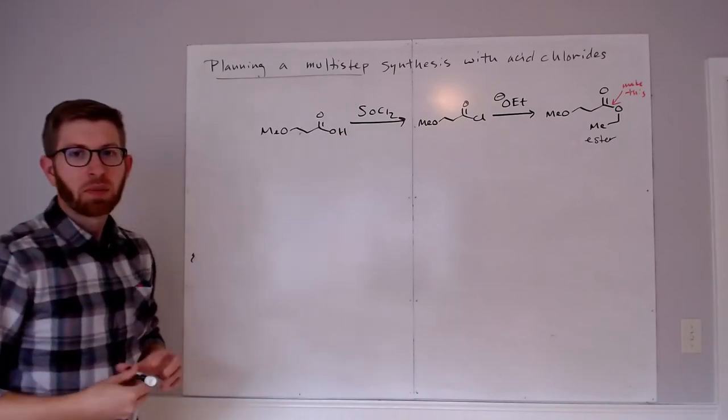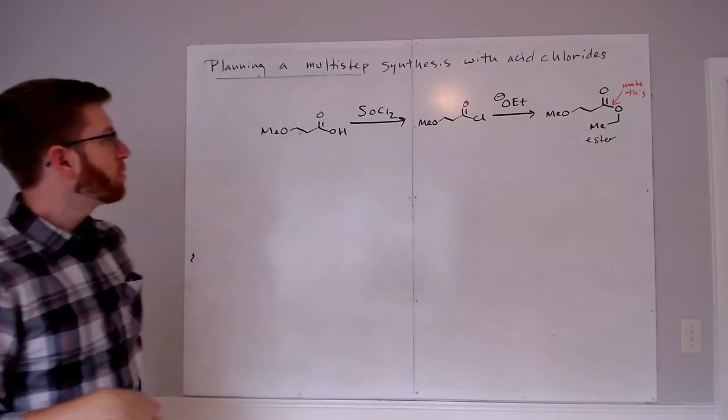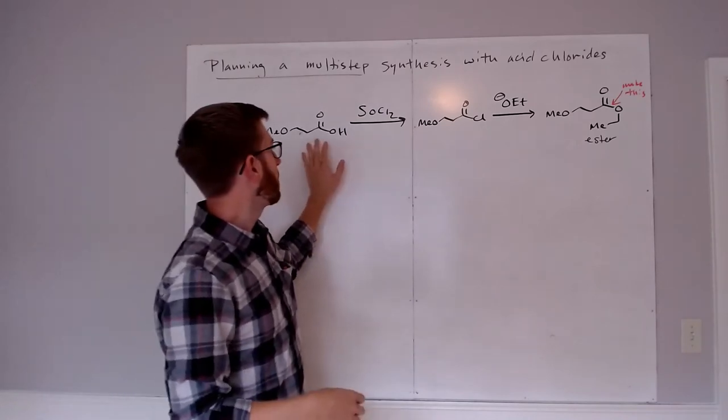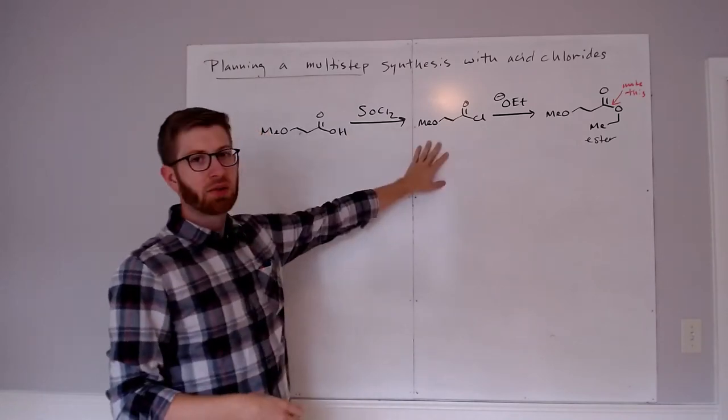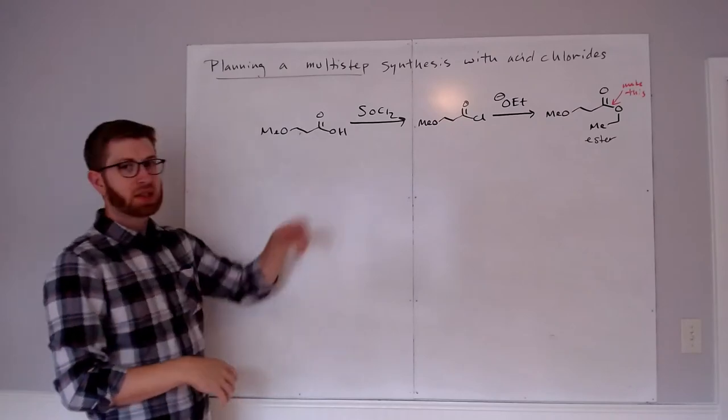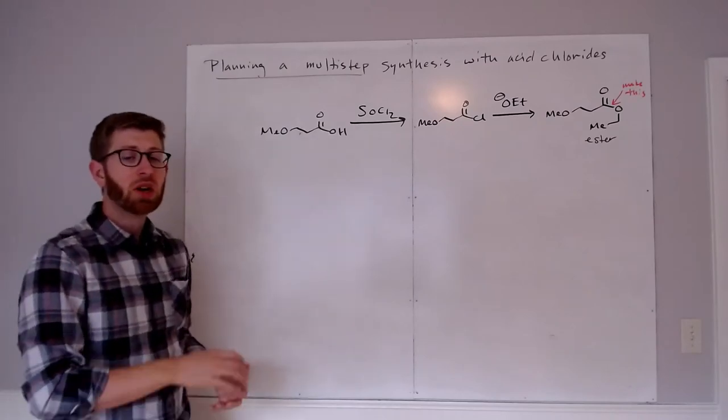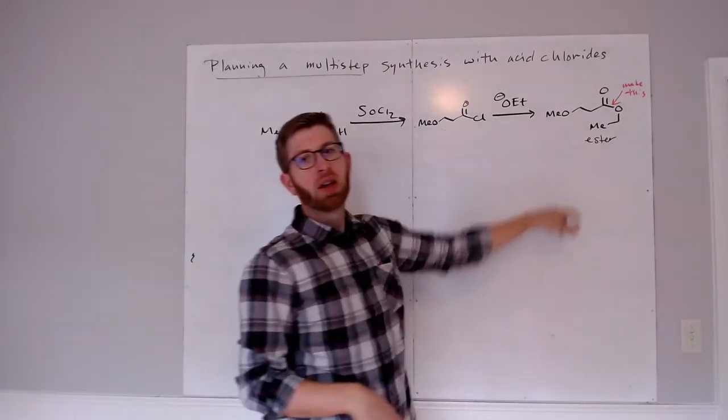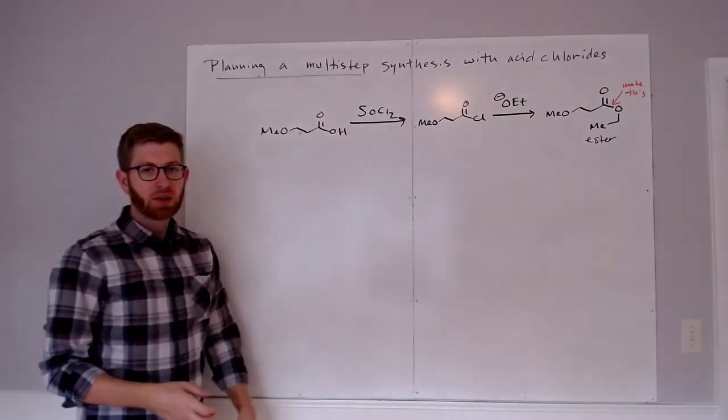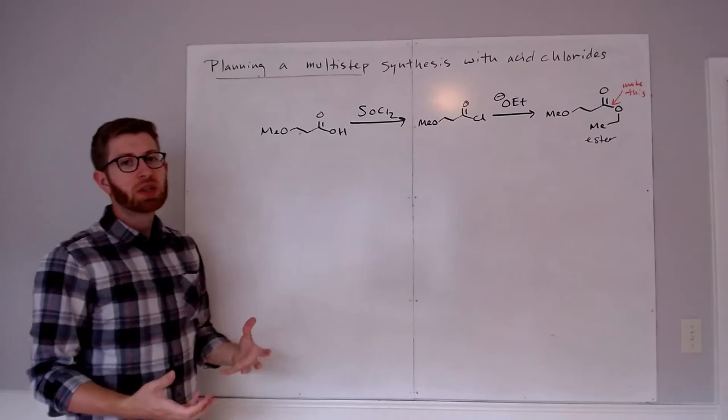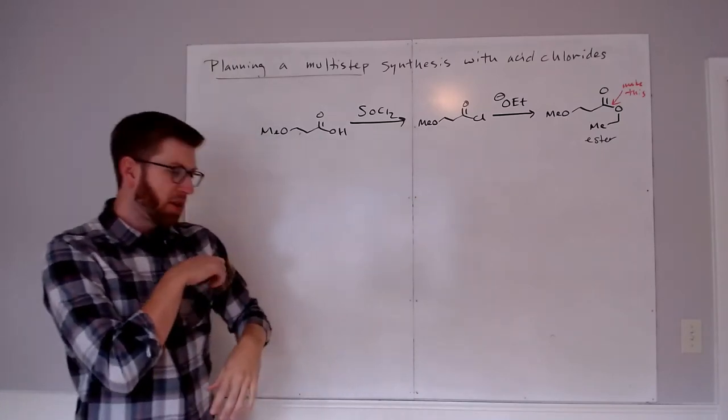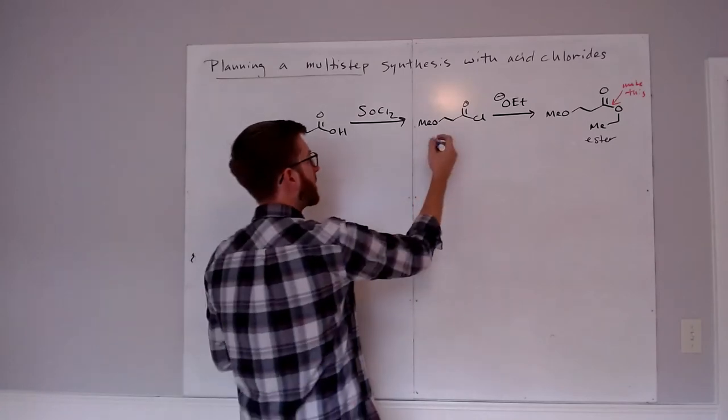So I've got my nucleophilic piece that's going to do the displacement or the substitution for the chlorine. This is looking good. But then the next question is, where would this come from? Maybe I can't buy it. So here is where our use of SOCl2, or thionyl chloride, is really helpful. We know that we can actually start from the carboxylic acid directly.